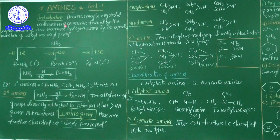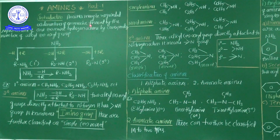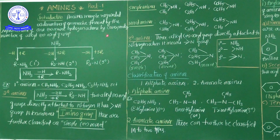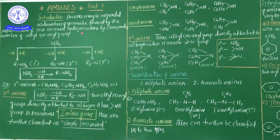Here is the introduction to the organic compounds containing nitrogen chapter. Amines may be regarded as derivatives of ammonia — this is the most important point. Amines are derivatives of ammonia formed by the replacement of one or more hydrogen atoms by the corresponding number of alkyl and/or aryl groups. So all kinds of amines — primary, secondary, or tertiary — are derivatives of ammonia.